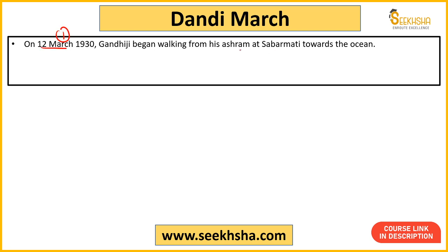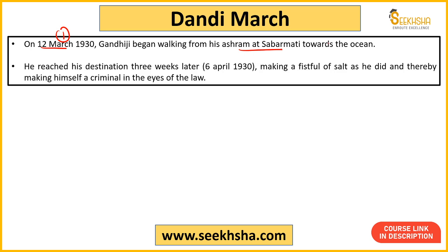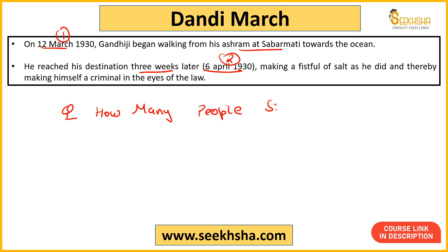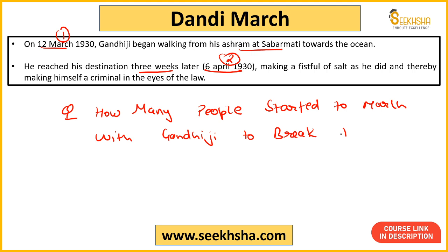Regarding the Dandi March, finally Gandhi Ji set out from Sabarmati Ashram to break the salt law. An important follow-up question you should be able to answer: how many people walked with Mahatma Gandhi when he left the Ashram? After that, lakhs of people joined him — that is a separate matter — but please comment below how many people were with him at the start of the march.